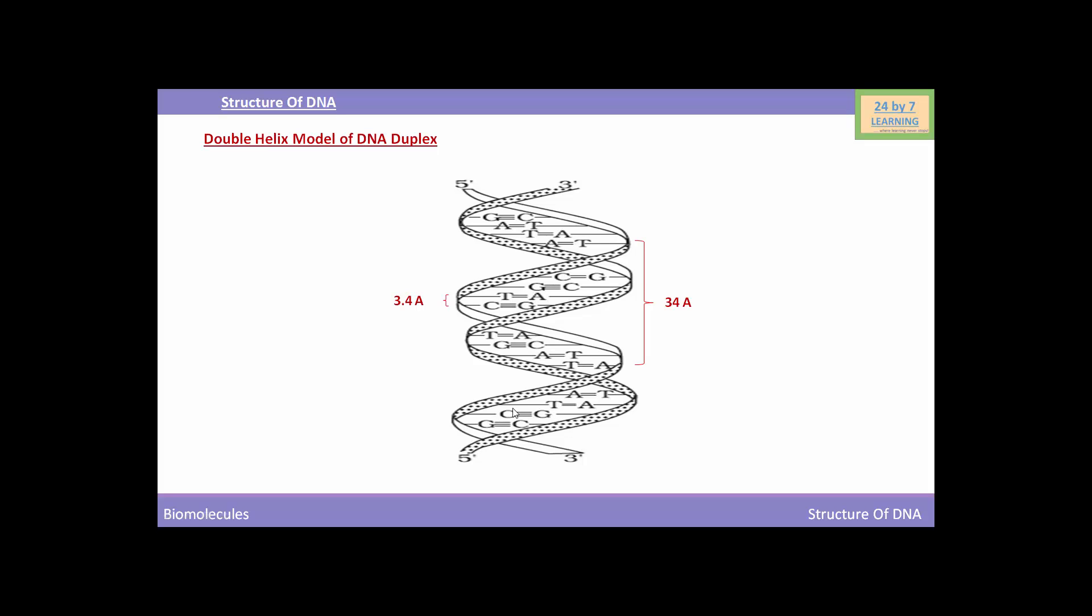This form of DNA which we mentioned here is known as B-DNA. DNA exists in many forms such as B form, A form, C form, D form. This is the B-DNA that we mentioned here. So this is all about the structure of DNA. Thank you.